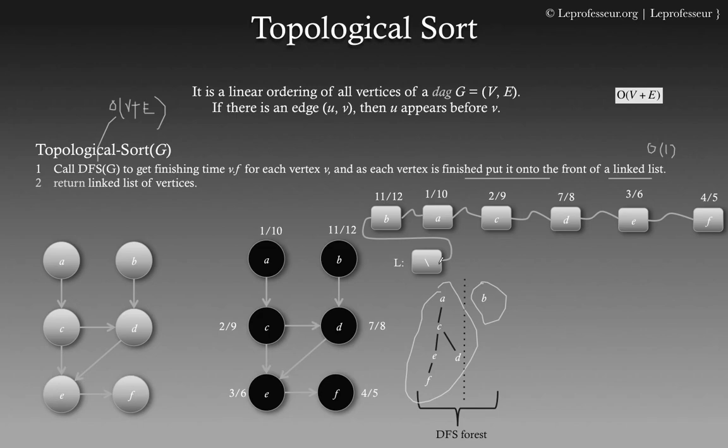And as you can see here, our linked list is finished. Now if we try to analyze, let's say we take an example of edge D to E, which was our condition that if there is any edge U to V, that is an edge. So let's say we have an edge D to E. So what it says that U appears before V, it means D appears before E. So if we can see this D, it appears before E.